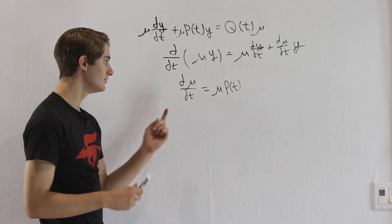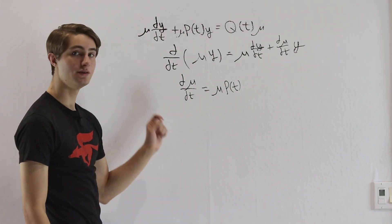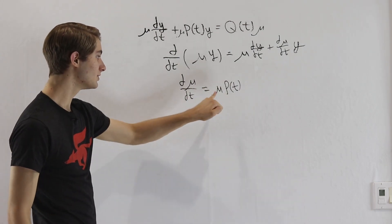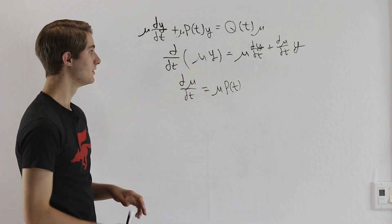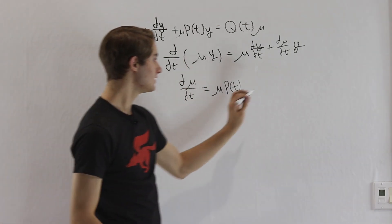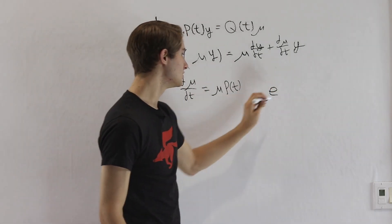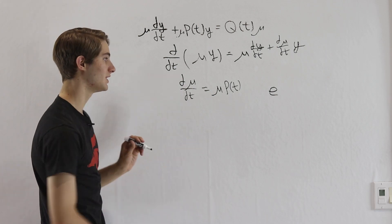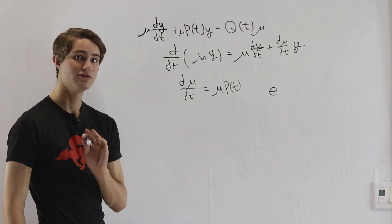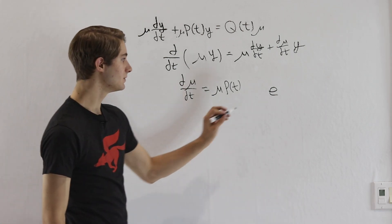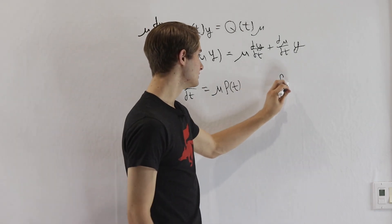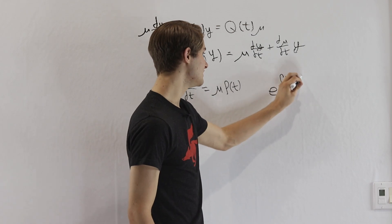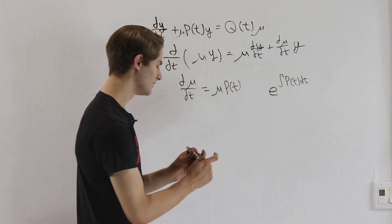Notice that dμ/dt, the derivative, is some function multiple of the original mu. This might make you think we should use e to the power of some function. And in fact, the function we want in the power is going to be the integral of p of t with respect to t.